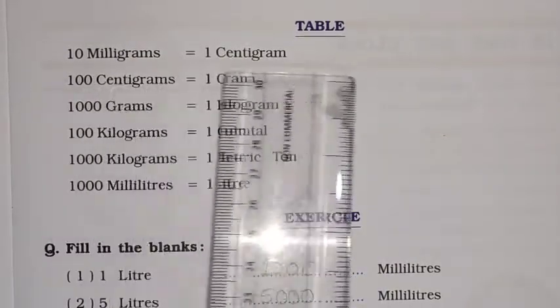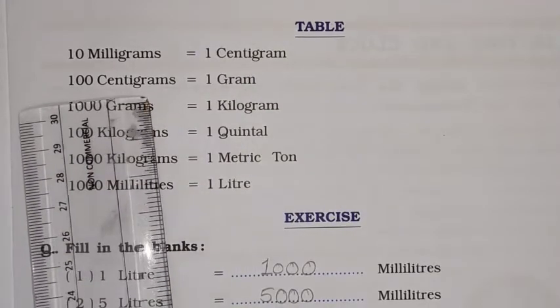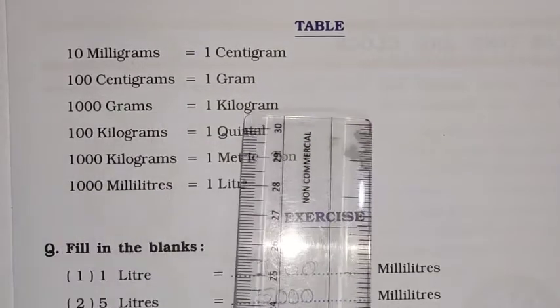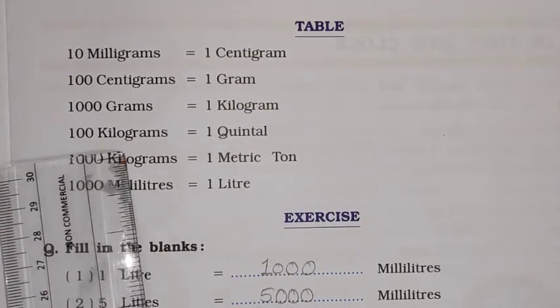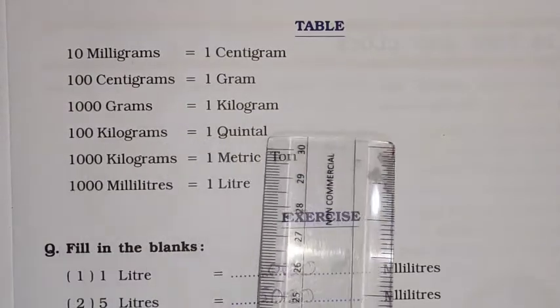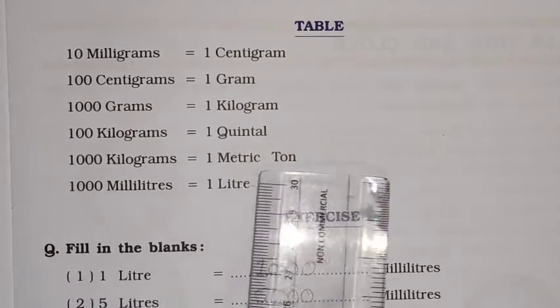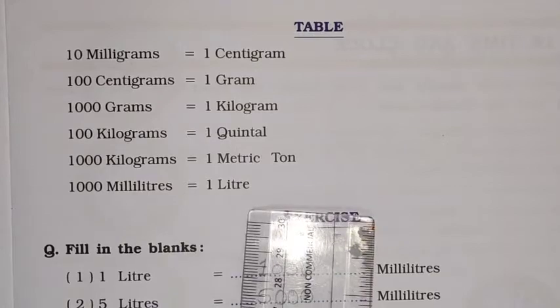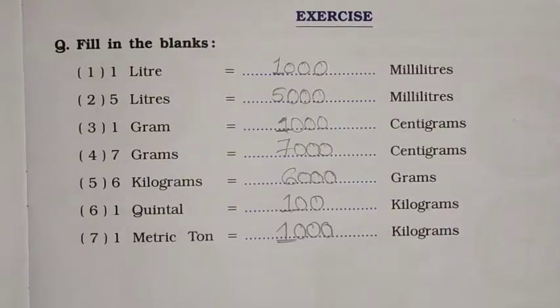10 mg is equal to 1 centi gram, 100 centi gram is equal to 1 gram, 1000 gram is equal to 1 kg, 100 kg is equal to 1 quintal, 1000 kg is equal to 1 metric ton, 1000 ml is equal to 1 litre.